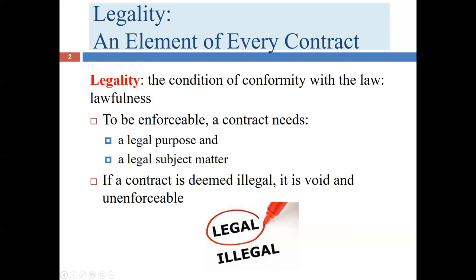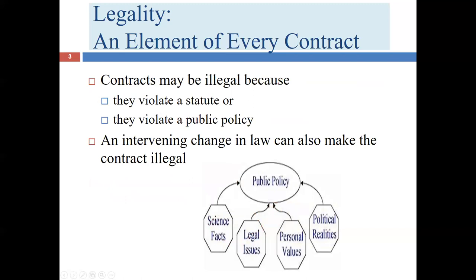We've talked about needing two things for a contract to be legal. Now we'll look at the two sources — or two buckets of law — we use to establish whether there's an illegal subject matter or illegal purpose. One thing we look to is a statute, which can be a federal or state statute, or something in a constitution or treaty — really any primary source of law that's well established.